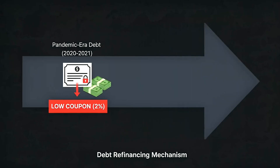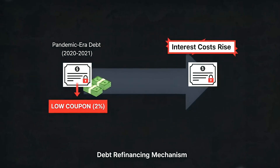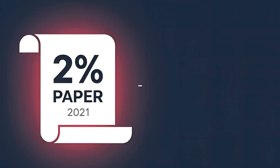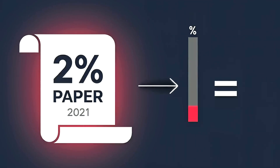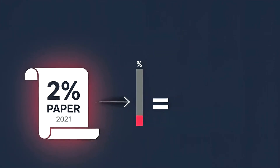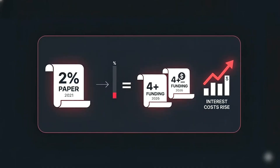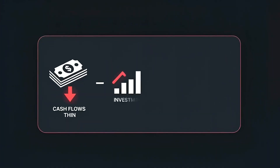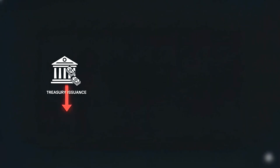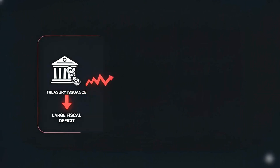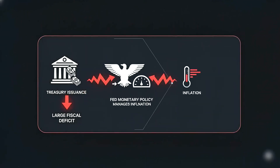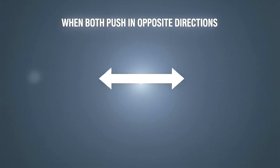The mechanism works like this. Cheap pandemic-era debt carried low coupons — the fixed interest rate on a bond. Much of it must roll — refinance old debt with new debt — by mid-decade. 2% paper from 2021 meets 4%+ funding by 2026. Interest costs rise, cash flows thin, investment slows. That arithmetic doesn't blink. Treasury issuance must fund a large fiscal deficit when government spends more than it collects, while the Fed manages inflation with monetary policy — how central banks set rates and money. When both push in opposite directions, markets price stress.